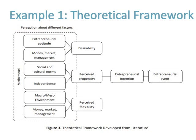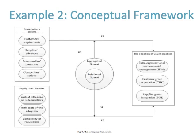In example one, the theoretical framework is developed from literature in the article 'Entrepreneurial Finance and its Impact on E-Business' written by Salman and Jameel in 2017. In example two, the conceptual framework is from 'The Role of Guangxi in Green Supply Chain Management in Asia's Emerging Economies: A Conceptual Framework' written by Gang Eyal in 2017.